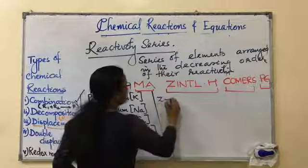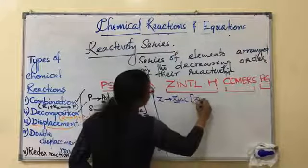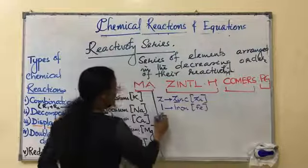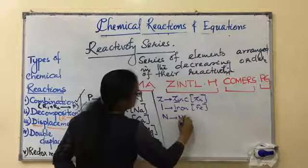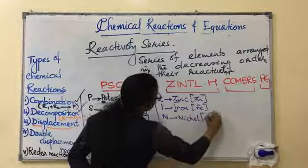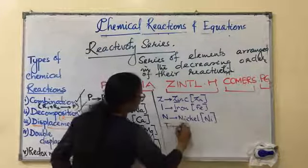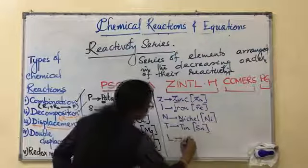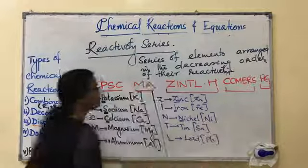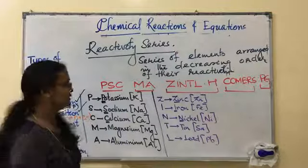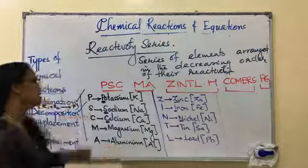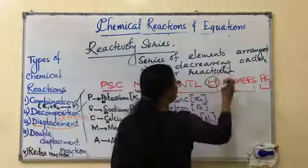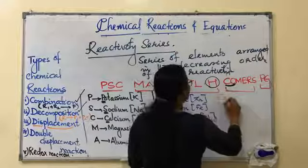Zintil. Z stands for zinc, symbol will be Zn. I stands for iron, Fe. N stands for nickel, Ni. T stands for tin, Sn. L stands for lead, Pb. H is hydrogen. I included over here because in the reactivity series we are considering hydrogen also to study the reactivity.